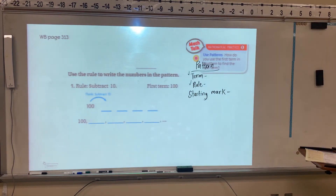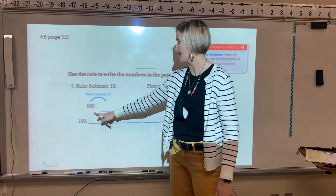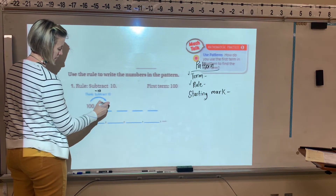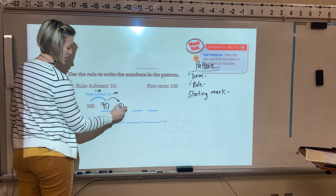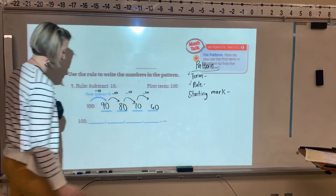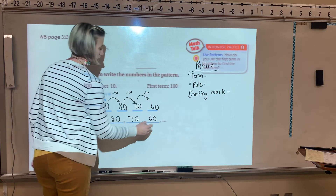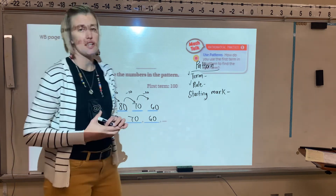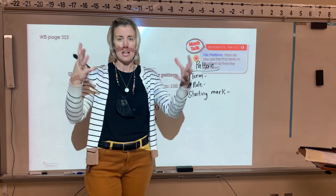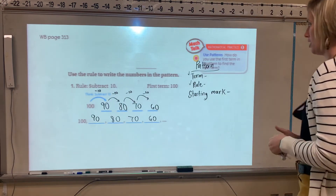Use the rule to write the numbers in the pattern. The rule is subtract 10, and the first term is 100. So: 100 minus 10 is 90, minus 10 is 80, minus 10 is 70, minus 10 is 60. Your pattern is 100, 90, 80, 70, 60. Notice in your workbook I'm choosing the key parts of this lesson and reviewing those with you.